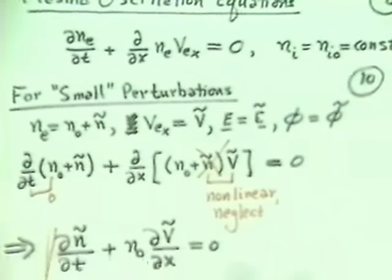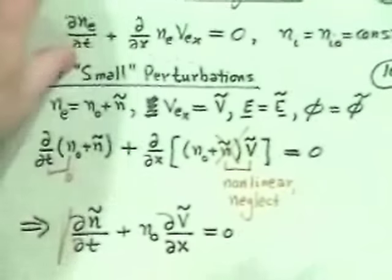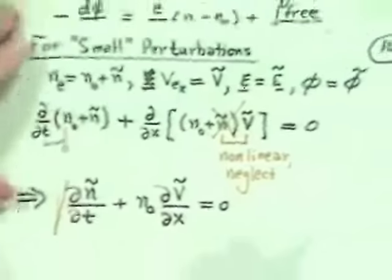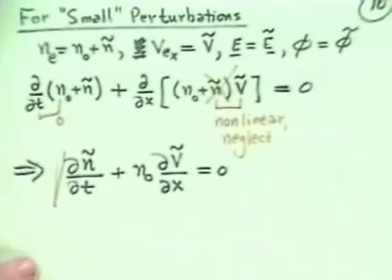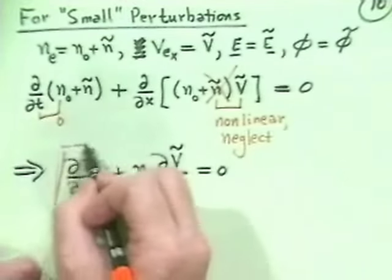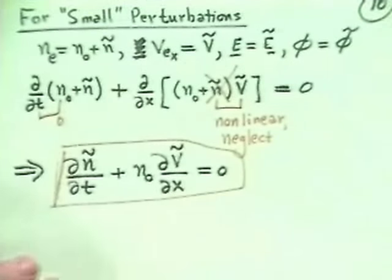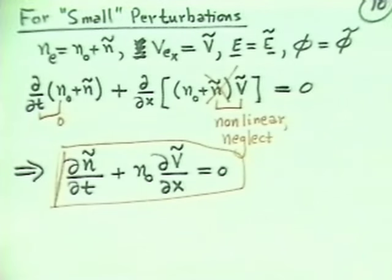So the net result of this is that my linearized, for small perturbations about the equilibrium, density conservation equation just becomes partial of N tilde with respect to T plus N naught dV tilde by dx is equal to 0. I'm trying to keep my equations up at the top here. So my density conservation, dN tilde dT plus N naught dV tilde by dx.